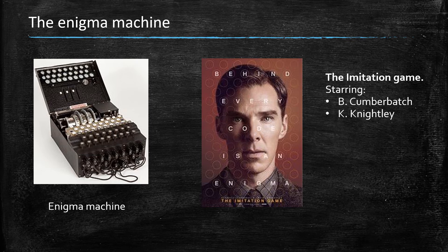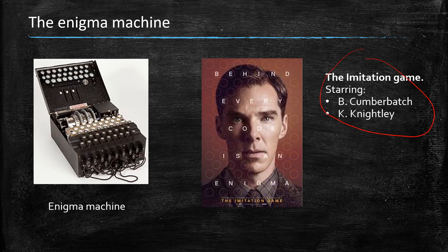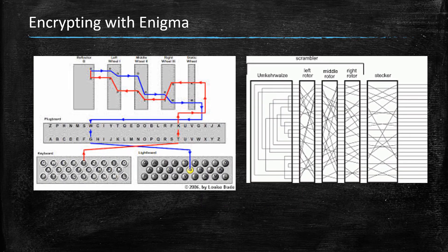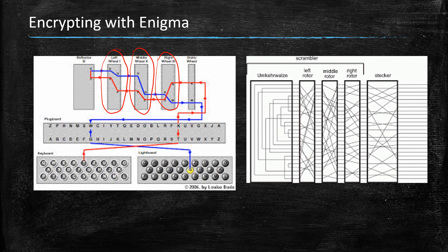Now the ultimate substitution cipher is perhaps the Enigma machine, which features in particular in a recent movie. The idea is that the shifts here are encoded in pieces of hardware.